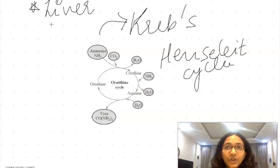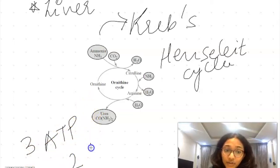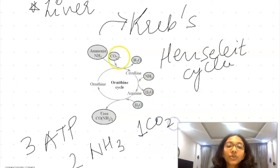You just have to know a few basic things about this cycle. This isn't from NCERT, this is for NEET portions. You have to know there is expenditure of 3 ATP in this cycle, plus there is requirement of two ammonia molecules and one carbon dioxide molecule to convert ammonia into urea.